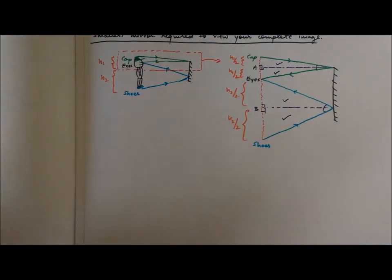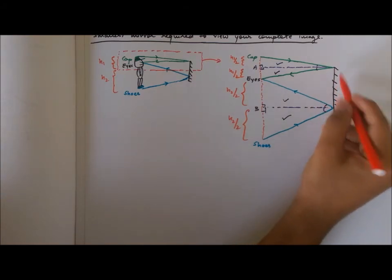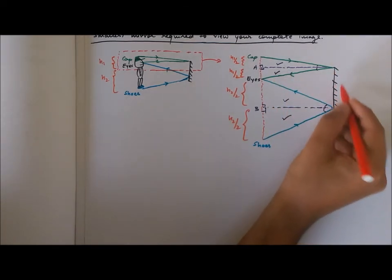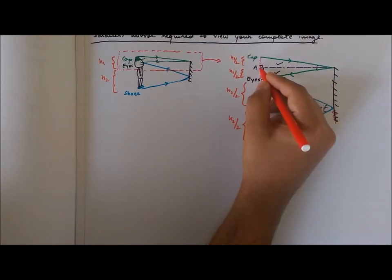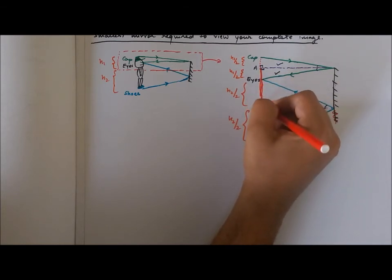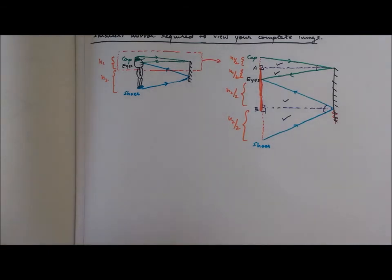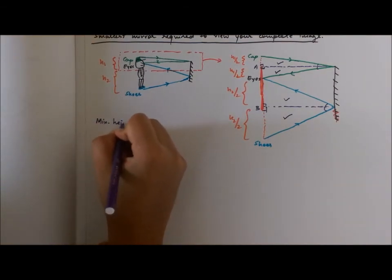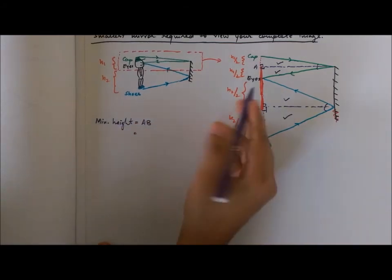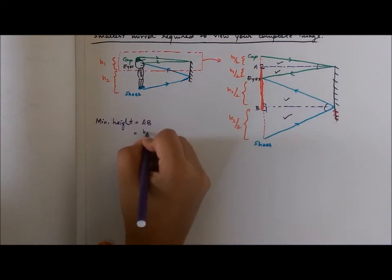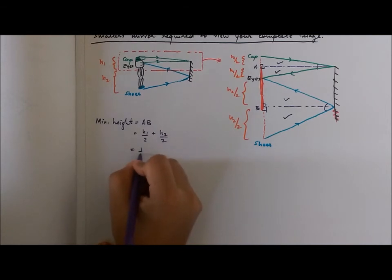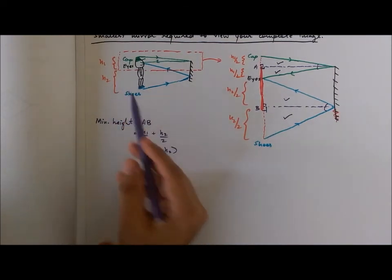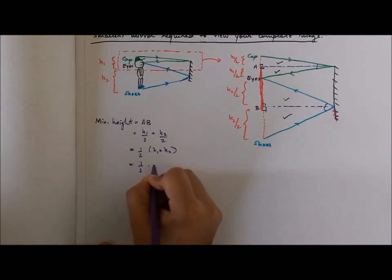The minimum height of the mirror we require is the line segment AB — we don't need anything above or below that. So the minimum height equals AB, which is h1/2 + h2/2, which equals half of (h1 + h2). Since h1 + h2 is my total height, the minimum height of the mirror required is actually half of my height.